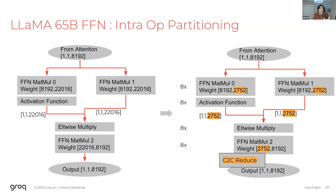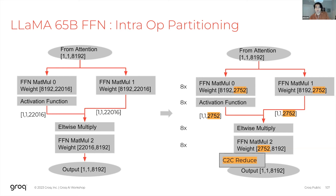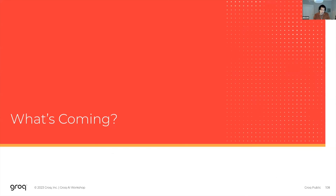Let's look at how one feed-forward network in a decoder block could be intraop-partitioned across eight chips. We take FFN matmuls 0 and 1 and decide to slice based on those operations — the weights and ops are sliced eight ways. We then propagate the slice to the elementwise multiply, then propagate to FFN matmul 2, and from there do a C2C reduce. We'd also apply something similar to the group attention earlier in the layer. That covers intraop partitioning and how we use both interop and intraop on real models.